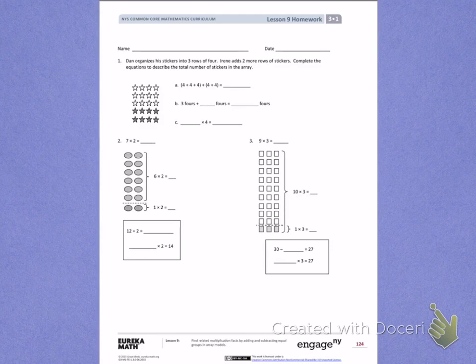When I look at the array, I can see the white stars represent Dan's stickers. The gray stars represent Irene's stickers. So I have 4 plus 4 plus 4 for Dan and 4 plus 4 for Irene. I'm going to help myself by skip counting by 4s.